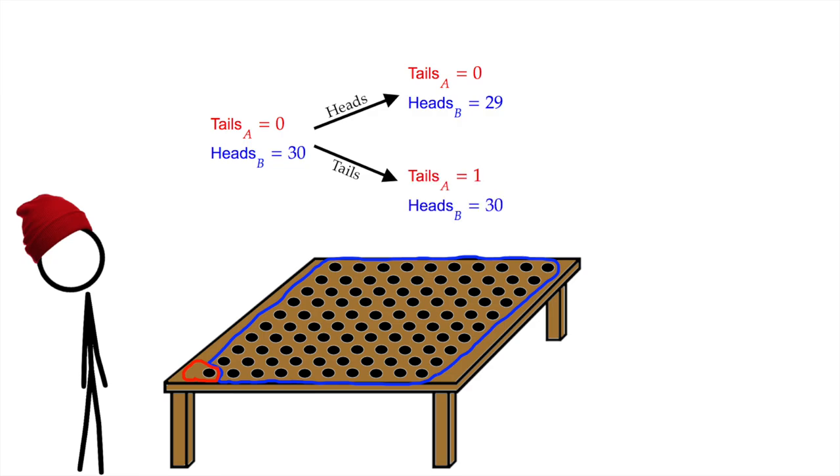On the other hand, if it was tails, then the number of tails in A is now 1, and the number of heads in B stays at 30. Hmm, either A goes up while B stays the same, or B goes down while A stays the same.